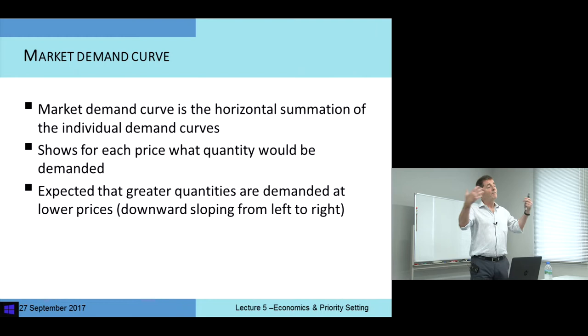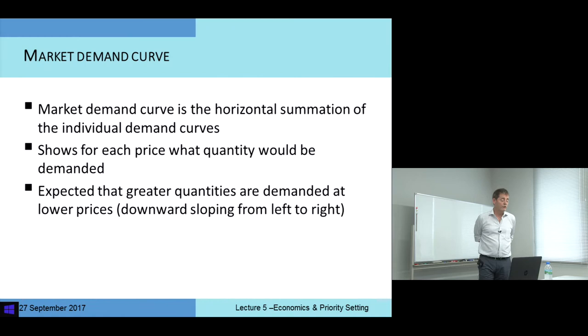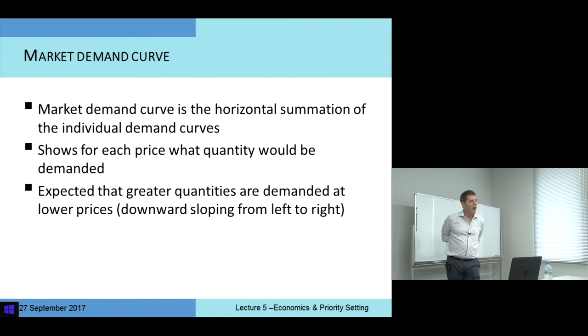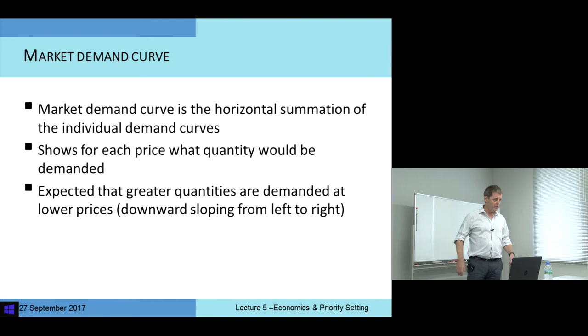The market demand curve is simply the summation of all the individual demands. If we're thinking of the market for anything, the size of that market can be captured by the demand curve — it shows a relationship between price and the quantity that people want to purchase. The market demand curve is just the sum of all the individual demands that different households or individuals have. It shows at each price what quantity will be demanded. With very few exceptions, we expect larger quantities to be demanded at lower prices. If the price falls, we expect demand to rise — this gives us a downward sloping demand curve from left to right.